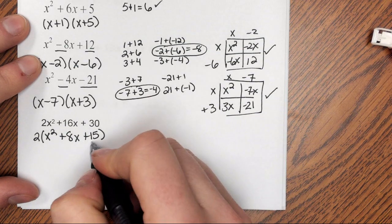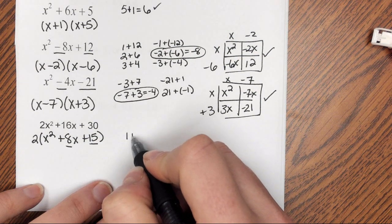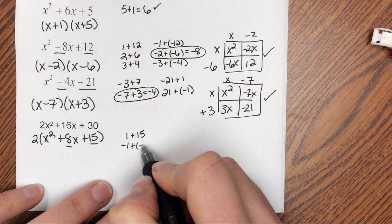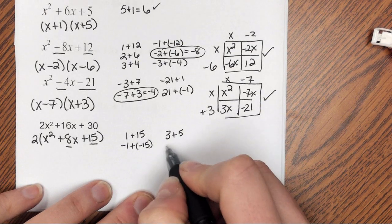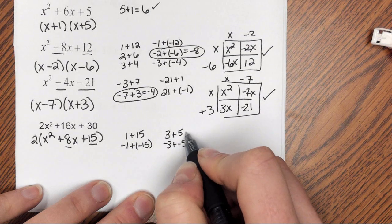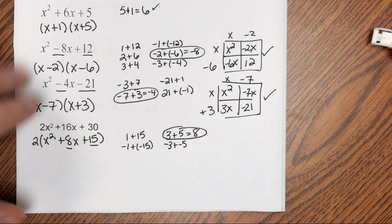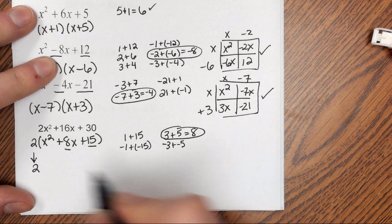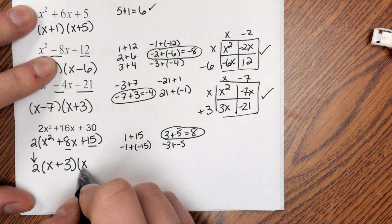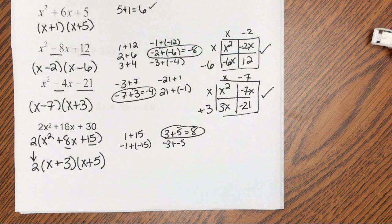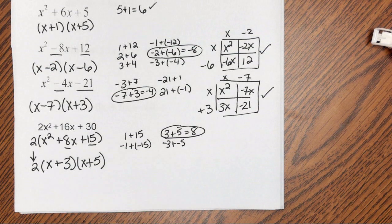So I need factors of 15 that add to be 8, so my factors of 15 are 1 and 15, negative 1 and negative 15, 3 and 5, and negative 3 and negative 5. Of those, 3 plus 5 equals 8, so that's the factor pair I'm going to use. I'm going to bring the 2 down, and then I have x plus 3 times x plus 5. So that's completely factored. The hard part about this is when you have a GCF, you need to remember to bring that GCF down as well.